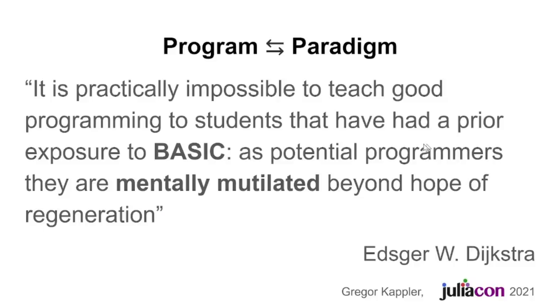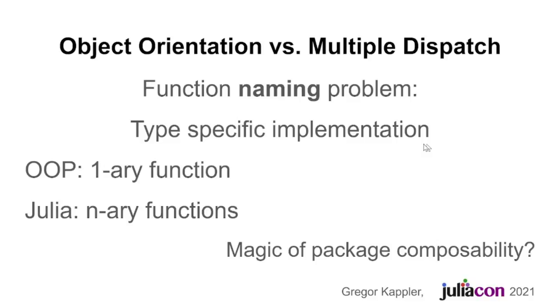At the time, object orientation seemed a good idea, with class-specific function implementations for the same name. Yes, naming things is a hard problem. However, only one-argument functions were covered.